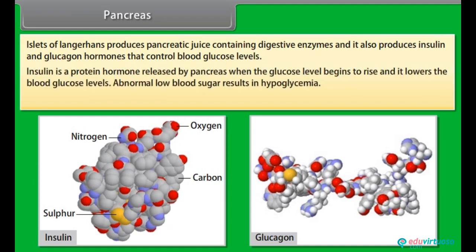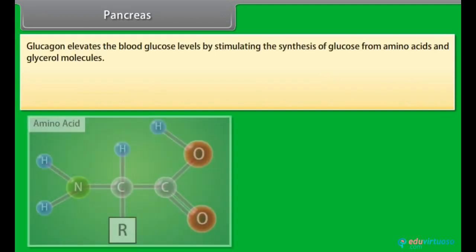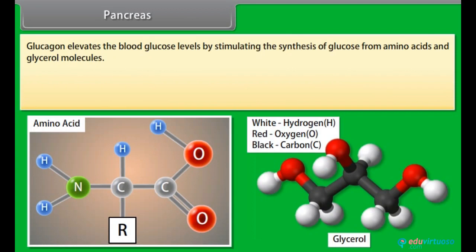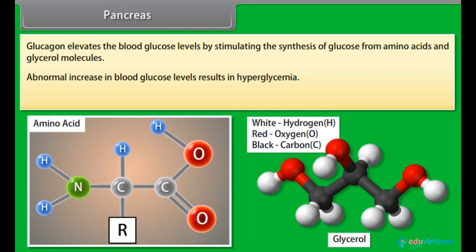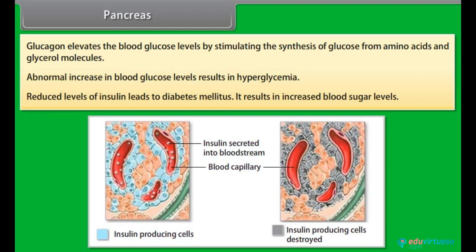Insulin is a protein hormone released by the pancreas when glucose levels begin to rise, and it lowers blood glucose levels. Abnormally low blood sugar results in hypoglycemia. The most important function of insulin is that it stimulates the uptake of glucose in liver and muscle cells. Glucagon elevates blood glucose levels by stimulating the synthesis of glucose from amino acids and glycerol molecules. Abnormal increase in blood glucose levels results in hyperglycemia. Reduced levels of insulin lead to diabetes mellitus, resulting in increased blood sugar levels.